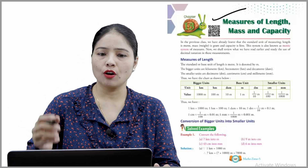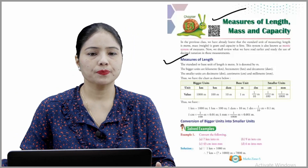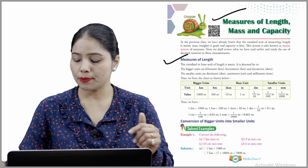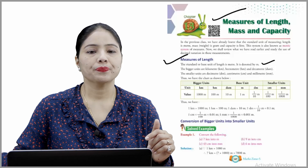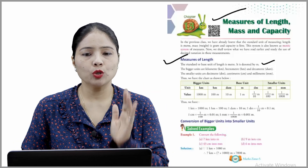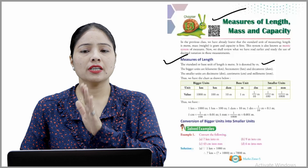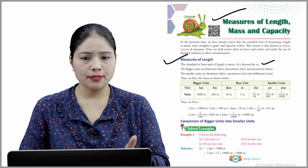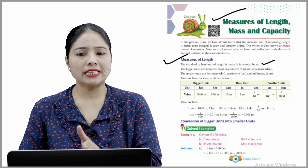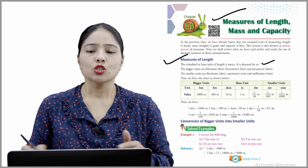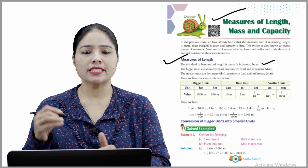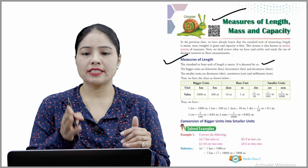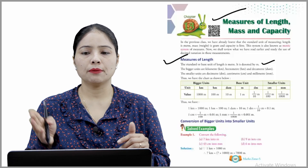The first topic is measures of length. The standard or base unit of length is meter, denoted by m. The bigger units are kilometer, hectometer, and decameter. The smaller units are dm (decimeters), centimeter (cm), and millimeter (mm). The table shows: bigger units, then base unit, then smaller units — kilometer, hectometer, dam, m, dm, cm, and mm.